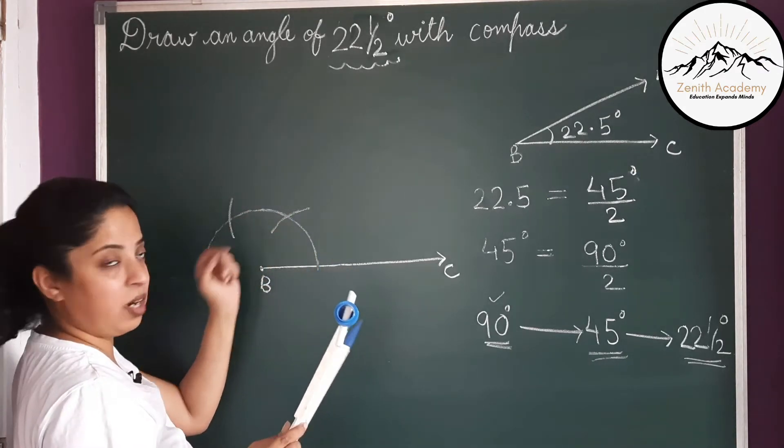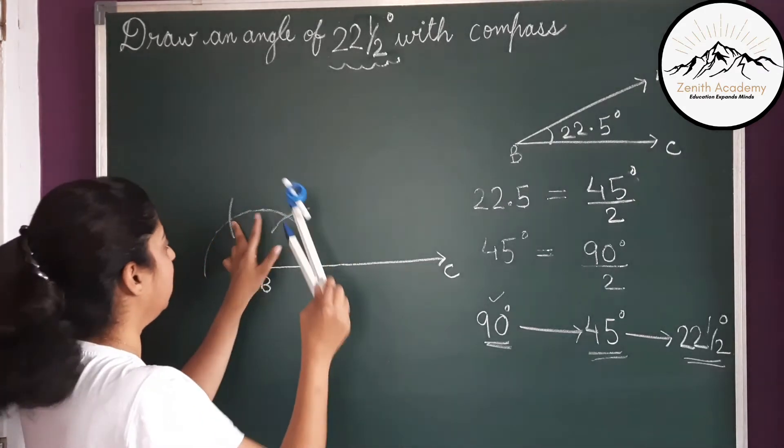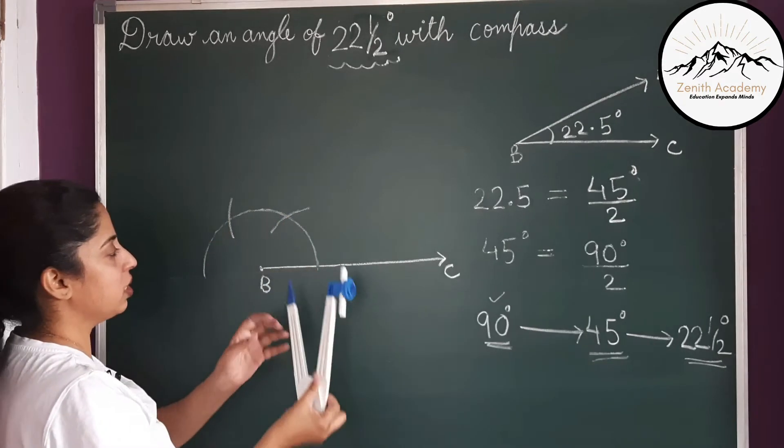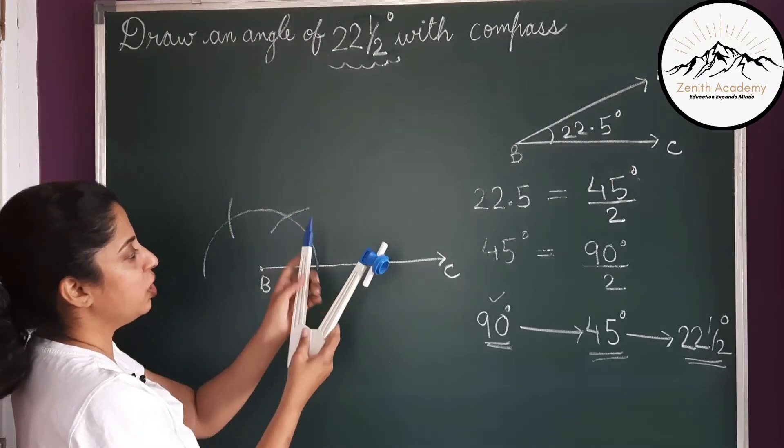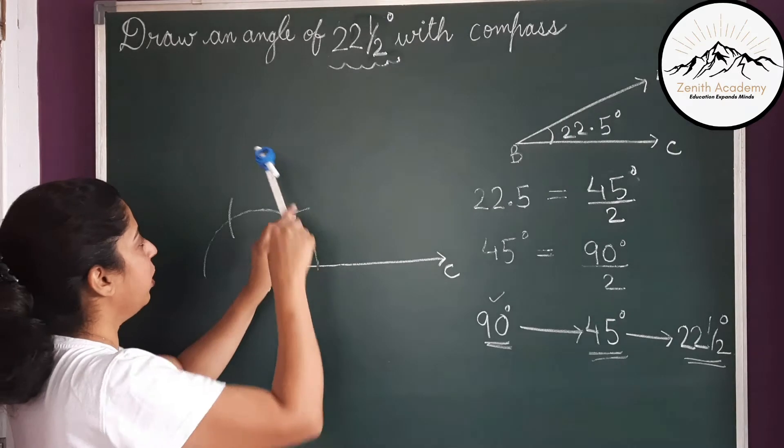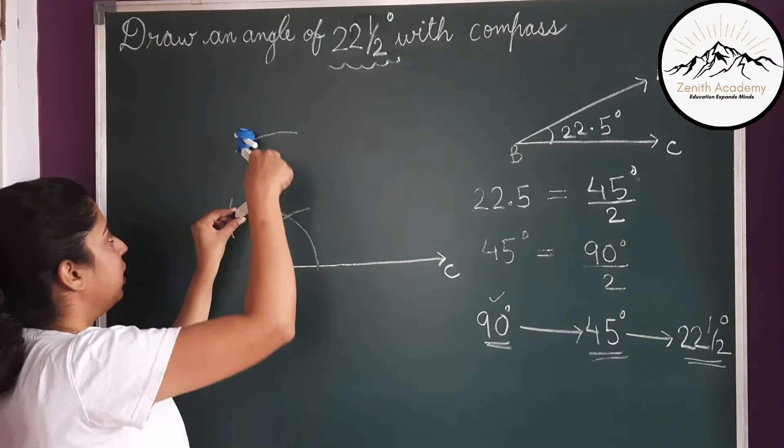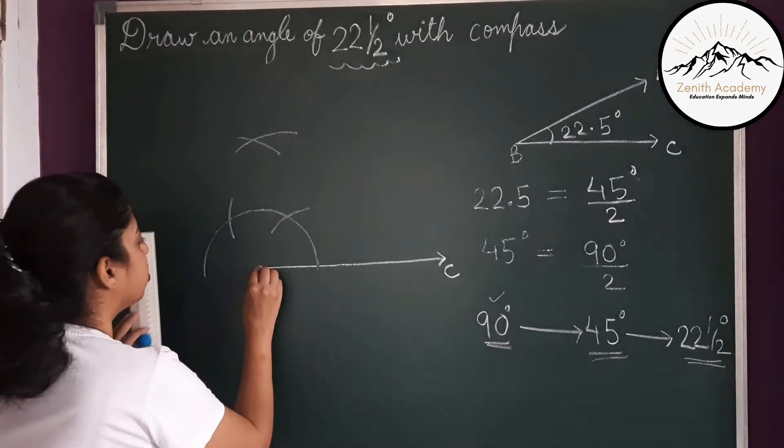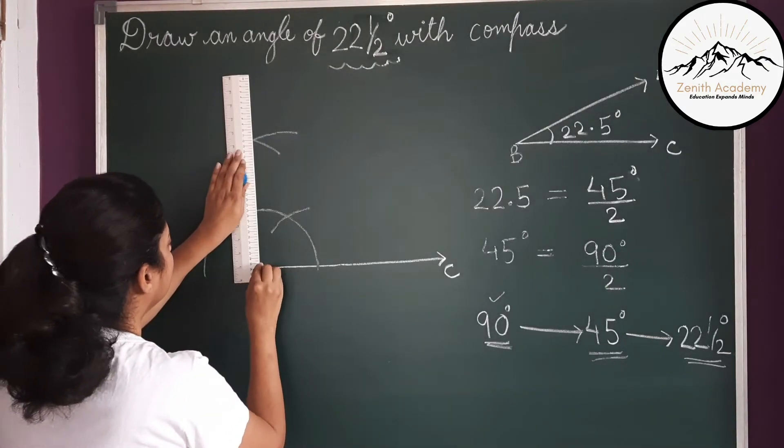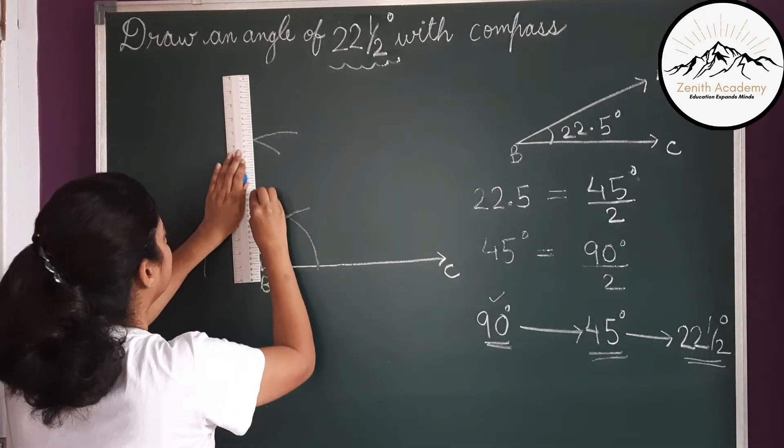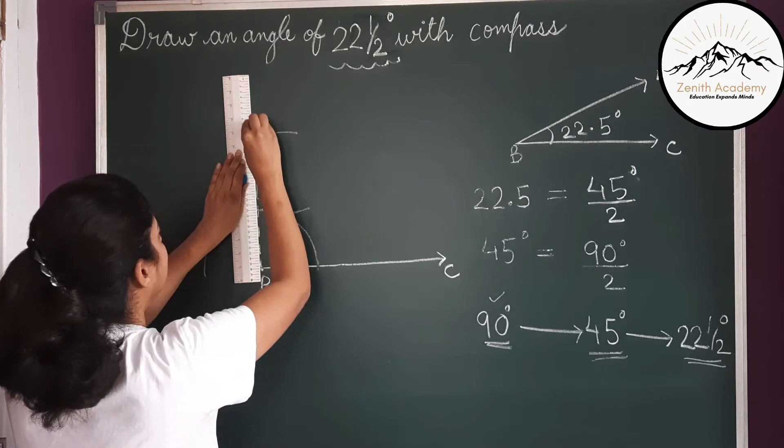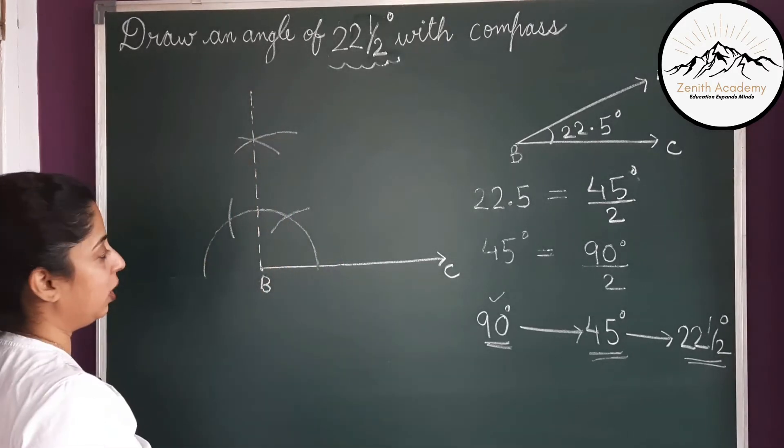So 60 plus 30 is 90. So we will bisect this 60 degree. So we will take these two points. Now we can stretch it. Keep the pointer at this point, make a cut. Now keep the pointer at this point and make a cut. Now we will join B and this point where the arcs have intersected. Now this is 90 degree.